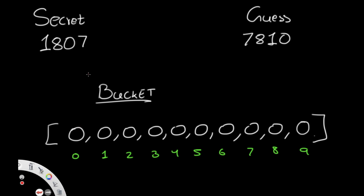We go through numbers one by one. First, secret has 1 and guess has 7 — not the same, so not a bull. For the secret digit, we go to index 1 and add 1, making it 1. For the guess digit, we go to index 7 and subtract 1, making it -1. The purpose of this will become clear soon.